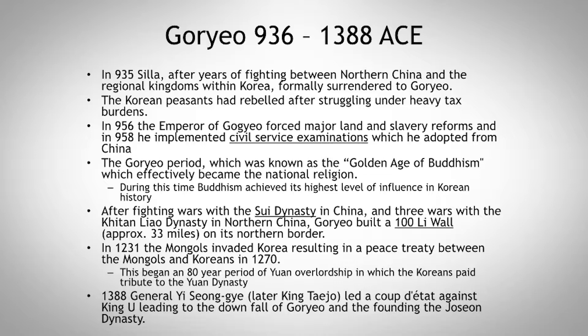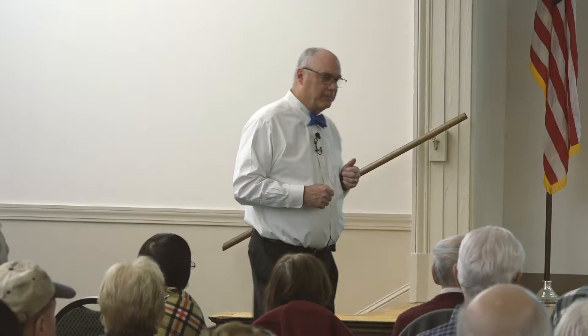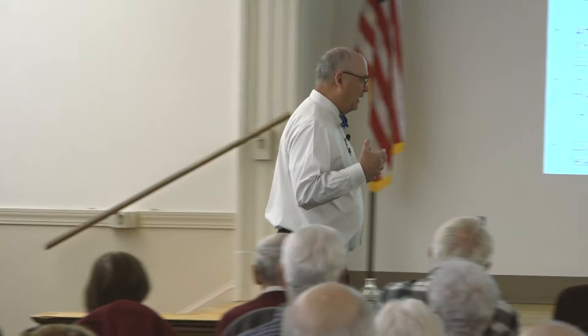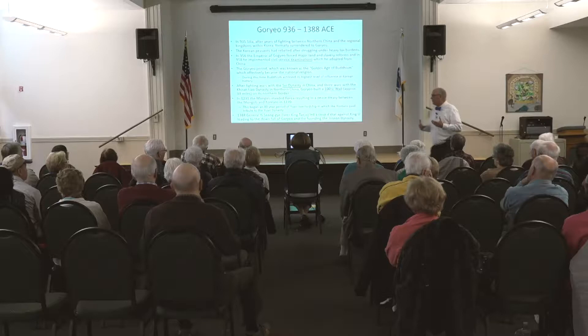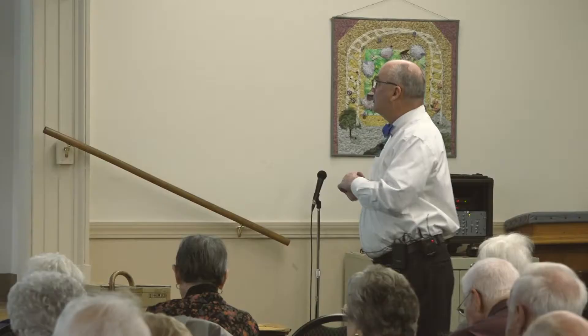Then in 1388, General Yi Seonggye — later known as King Taejo — led a coup d'état against King U, leading to the downfall of Goryeo and the founding of the Joseon dynasty. This is a brief overview of early Korean history; there are so many dynasties, with one taking over another and capitals being moved around. I'm just trying to give you a sense of what's going on.